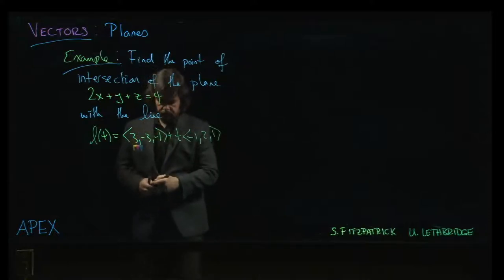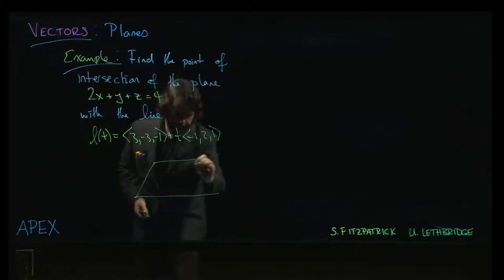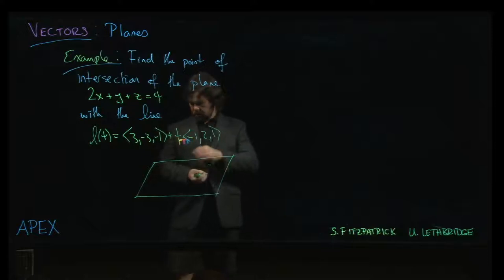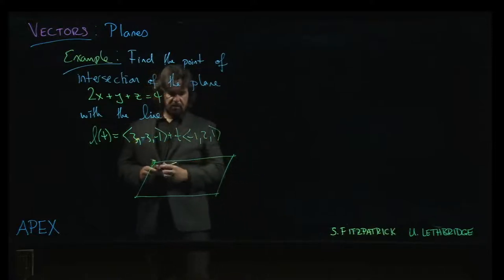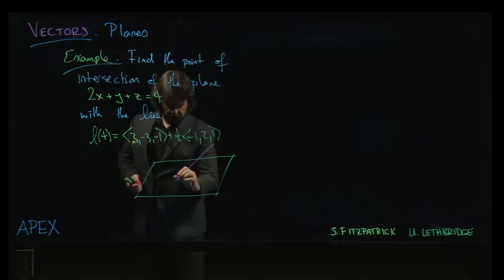So the picture that you want to have in mind this time, you've got a plane, and you've got a line. Now if the line happens to be parallel to the plane, but through a point not on the plane, then there won't be a solution to this problem. But hopefully we get lucky and we're looking at a situation that's something like this.